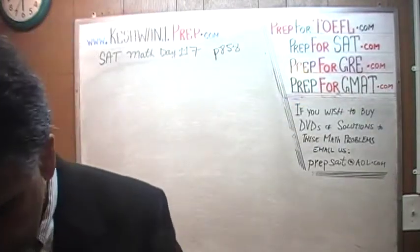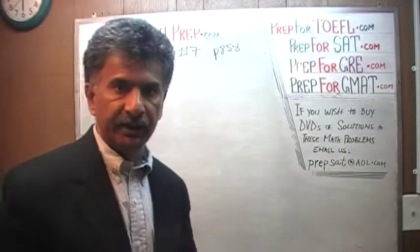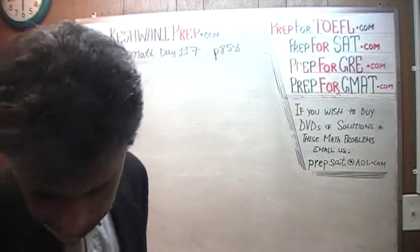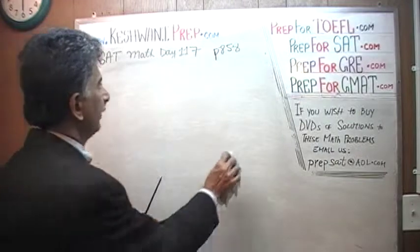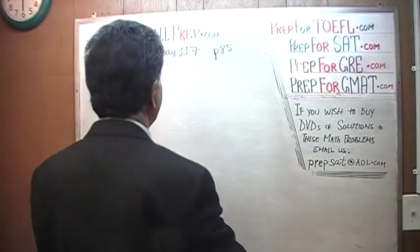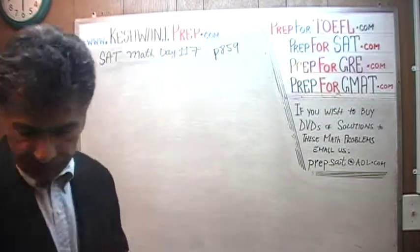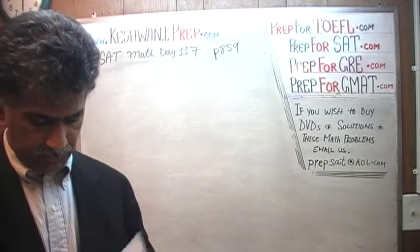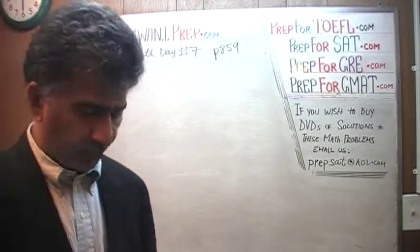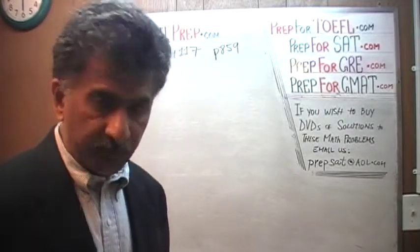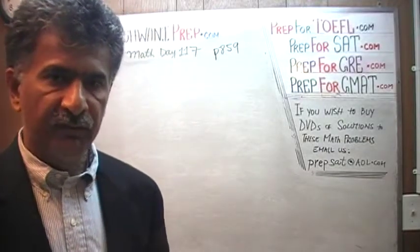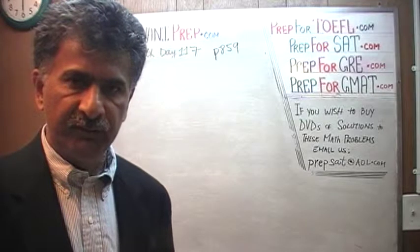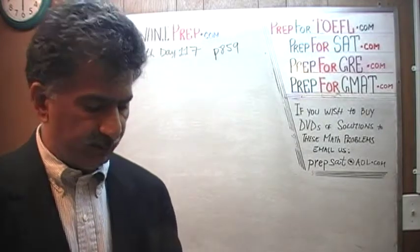The problem that we are about to solve is on page number 859. Please turn to it. Page 859 and today is our lesson number 117. Number 7. These are medium problems. This section has 16 questions, which means the first one-third are easy, the next one-third are medium, and the last five or six questions are going to be hard.